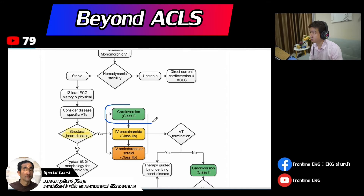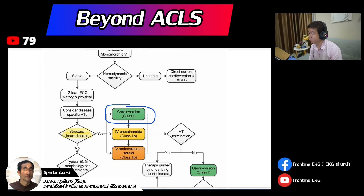The first choice for stable VT is cardioversion. You don't have to be overly concerned — cardioversion is the stable, easier first choice to save the patient. Amiodarone is only Class 2B, which is not a strong recommendation. Most patients need to be able to terminate the arrhythmia, and there is a chance of running down the EF.